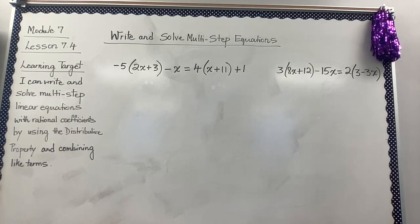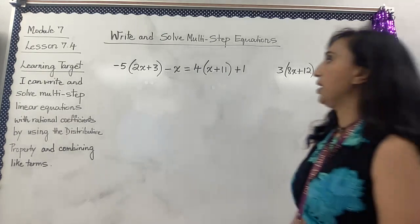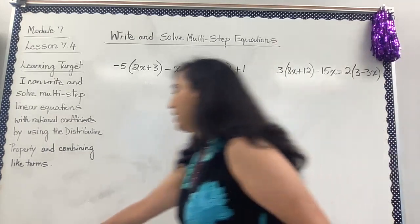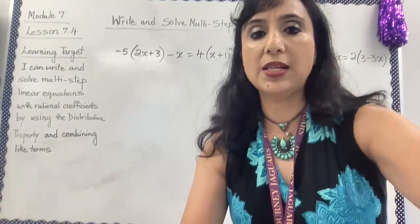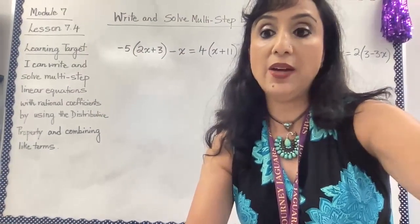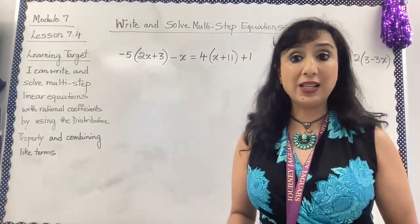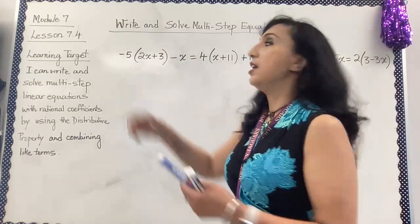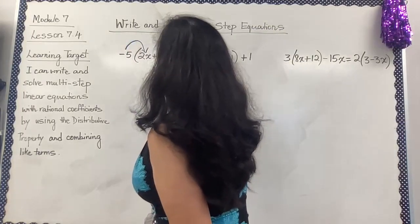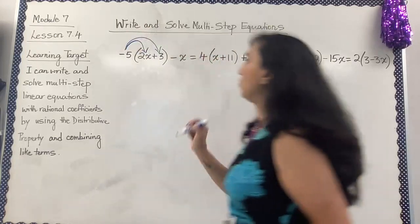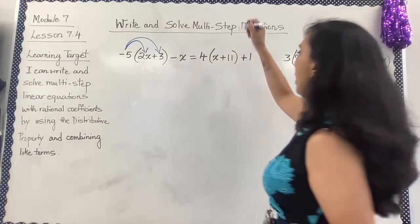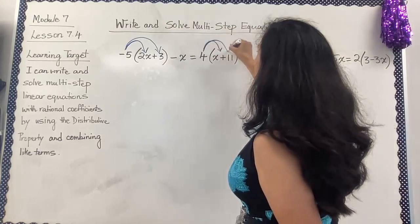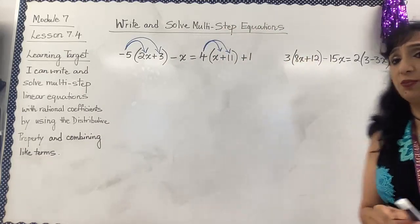Looking at this first equation, we are going to expand the expression using the distributive property. The distributive property is where we take the term outside the parentheses and multiply it with each term inside the parentheses. So I'm going to do negative 5 times 2x, plus negative 5 times 3 on this side, and 4 times x plus 4 times 11 on the other side.